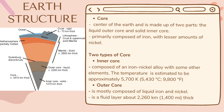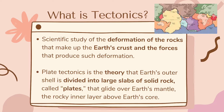Lastly is the core. It is the center of the earth and is made up of two parts: the liquid outer core and the solid inner core. It is primarily composed of iron with lesser amounts of nickel, and may also contain lighter elements such as sulfur, oxygen, or silicon. The inner core is composed of an iron-nickel alloy, and its temperature is estimated at approximately 5,700 Kelvins. The outer core is mostly composed of liquid iron and nickel, and is a fluid layer about 2,260 kilometers thick.